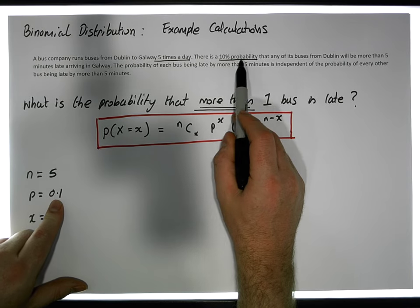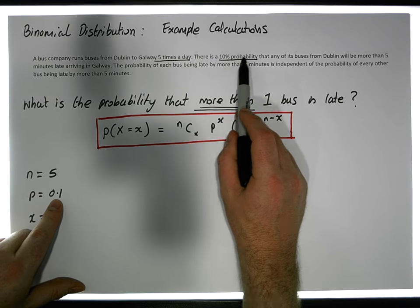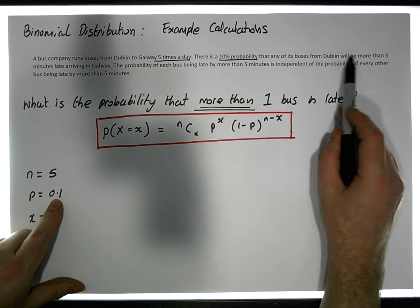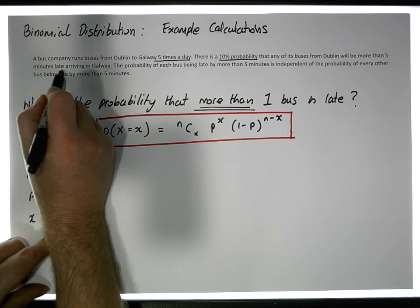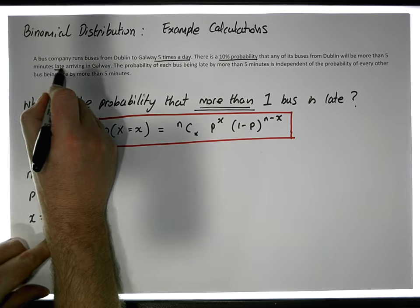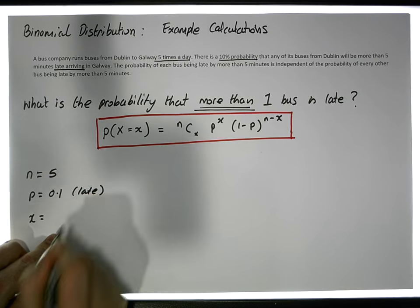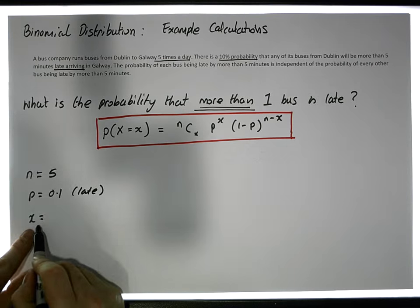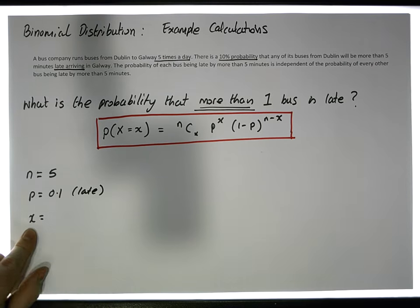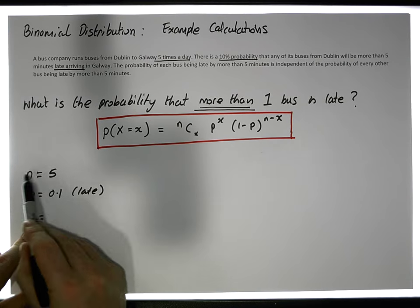But hang on — this P has a context. The context of this 0.10 is with respect to buses being late arriving. So this P = 0.10 refers to the probability that buses are late.